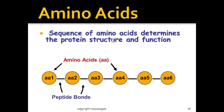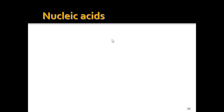The sequence — meaning the order and pattern — of amino acids determines the actual protein structure and function. It determines what the protein is going to be built like and also what its function is going to be. We'll talk more about amino acids a little later.